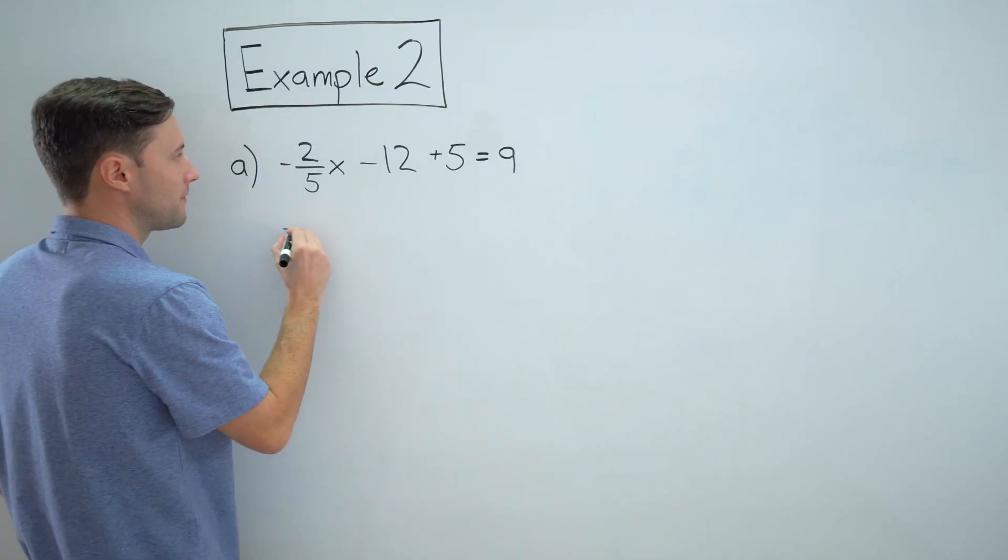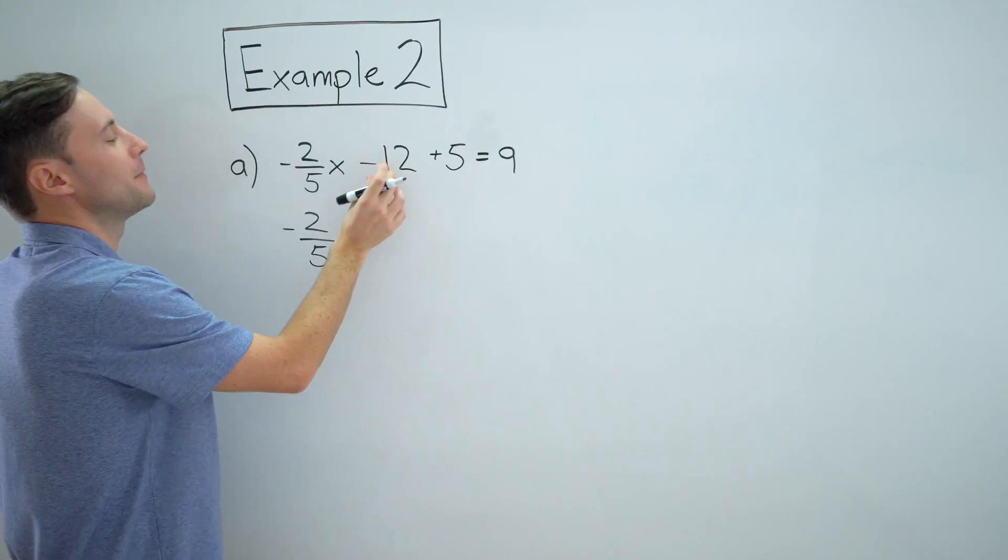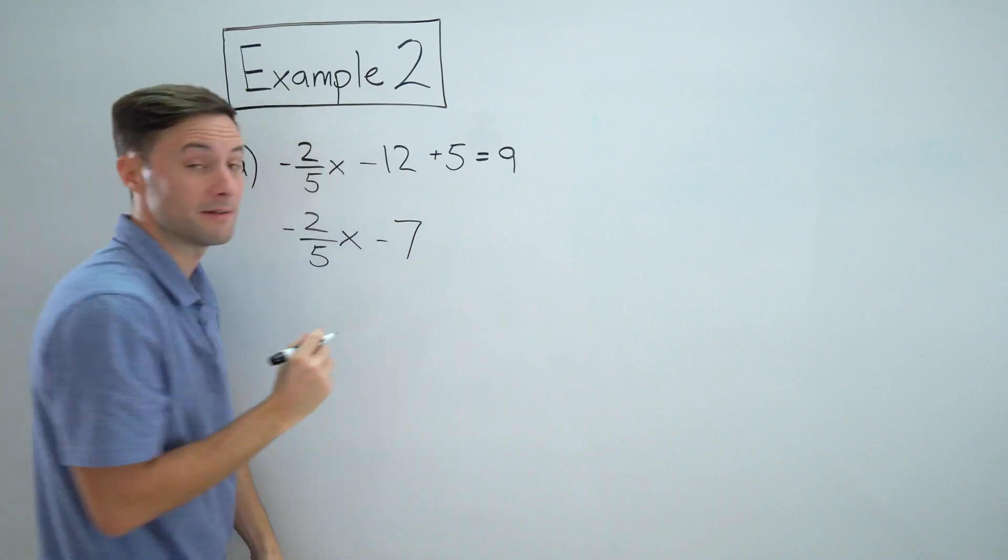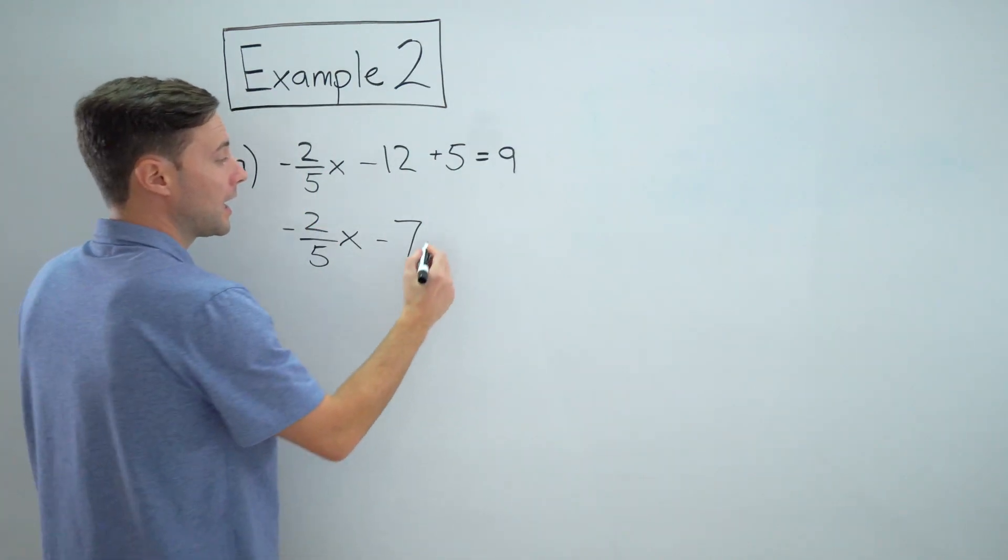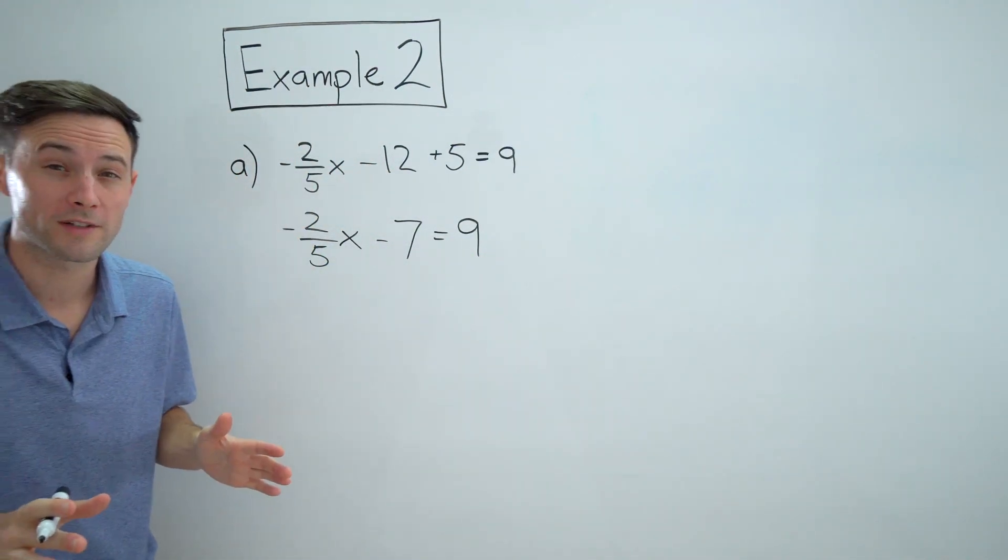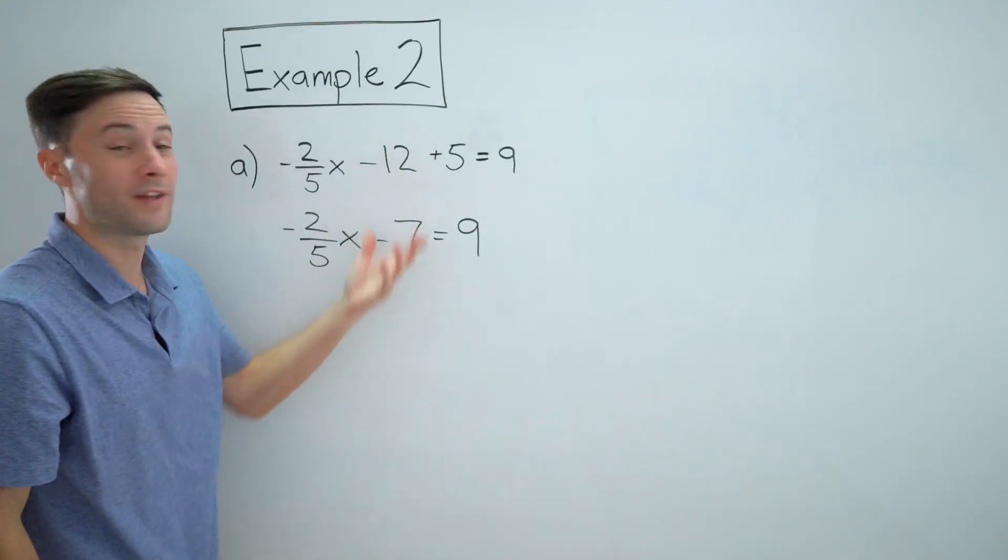I can simplify that to negative two-fifths x is still the same. Minus 12 plus 5 becomes minus 7, right? Negative 12 plus 5 is negative 7 equals 9. So if you can simplify the equation before you start to solve it, it's going to make things way easier.